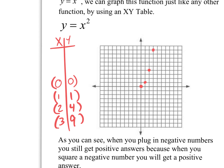Now what would happen if I plug in negative 1? What's negative 1 times negative 1? Positive 1. So negative 1 on the x, positive 1 on the y. And if I plug in negative 2? Negative 2 times itself is positive 4. So negative 2 on the x, positive 4 on the y. And negative 3? Positive 9. So negative 3 on the x, positive 9 on the y.